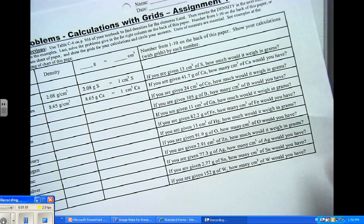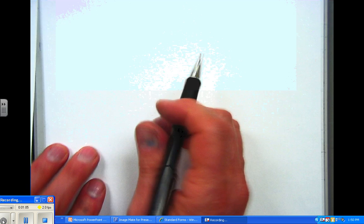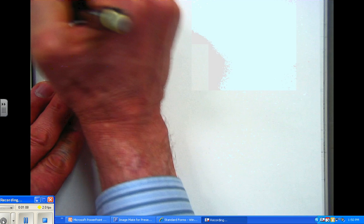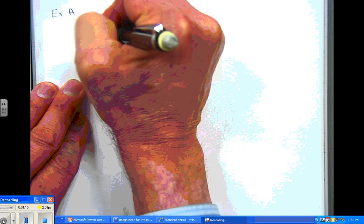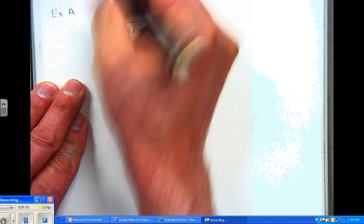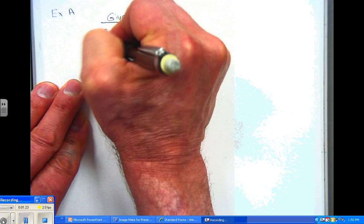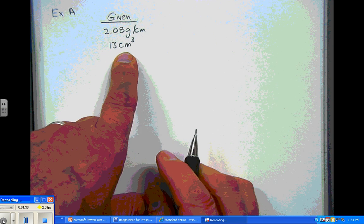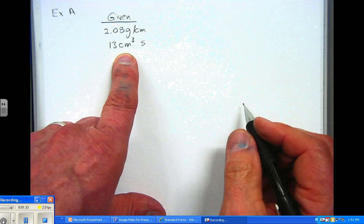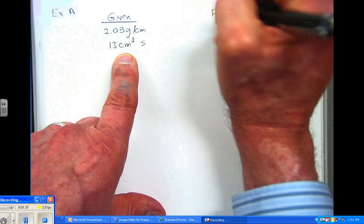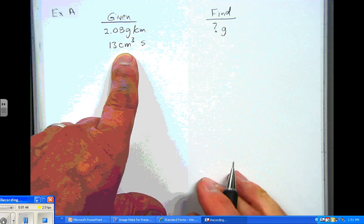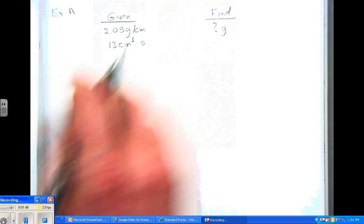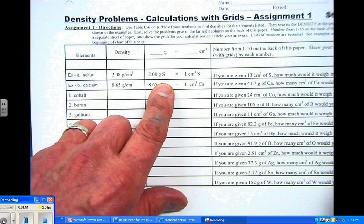Now we're going back and we're going to look at this and figure out what's given and what is supposed to be found. So this is example A on your sheet, and we have a given of 2.08 grams per cubic centimeter, and we have another given of 13 centimeters cubed. In other words, they say we have 13 cubic centimeters of stuff, in this case it's sulfur, and we're trying to figure out how much that should weigh. So in the find, our find is actually grams. How many grams of sulfur is that going to represent?